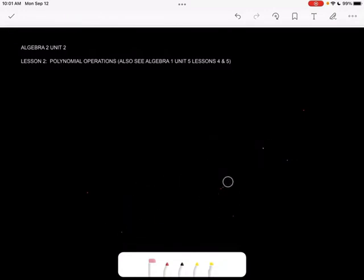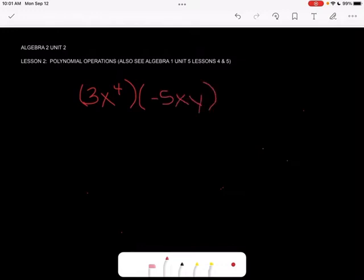Let's say that I want to multiply 3x to the 4th and negative 5xy. We can multiply these. This is a monomial times a monomial. And I just multiply my coefficients. So 3 times negative 5 is negative 15.